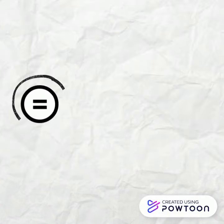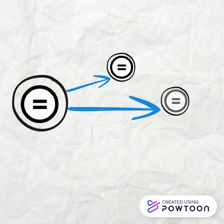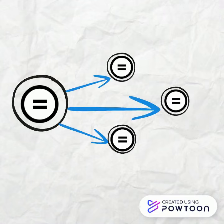Open access resources are items that the creator has allowed to be publicly available for reuse and sharing, but without any modifications. You may see a Creative Commons No Derivatives license attached to this type of resource.